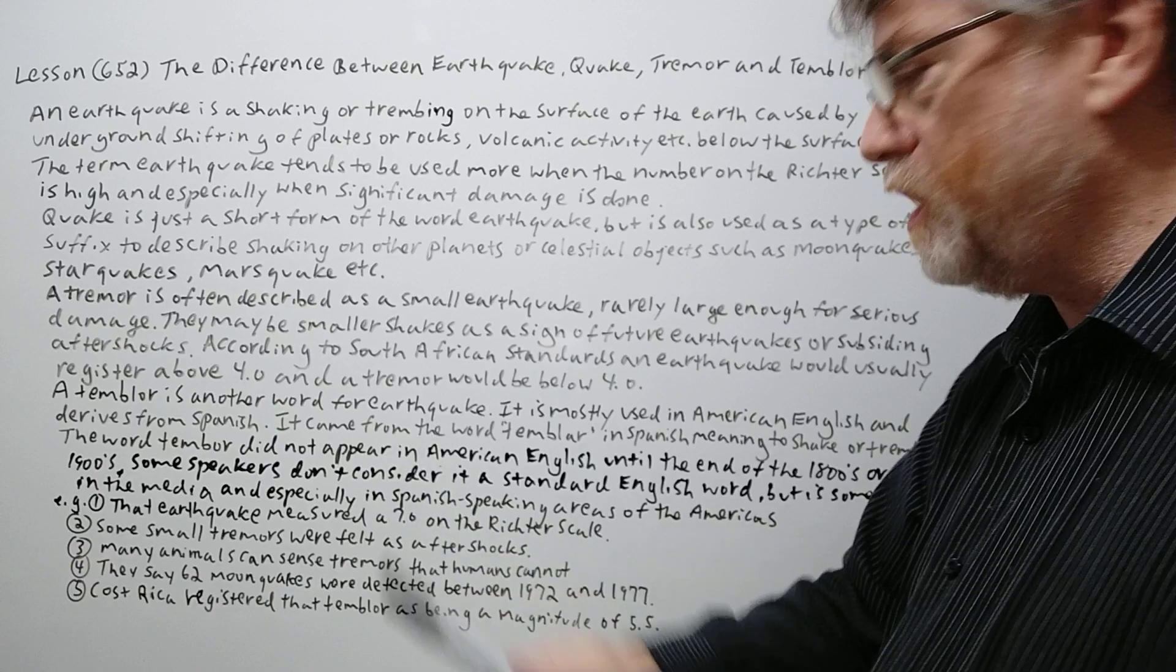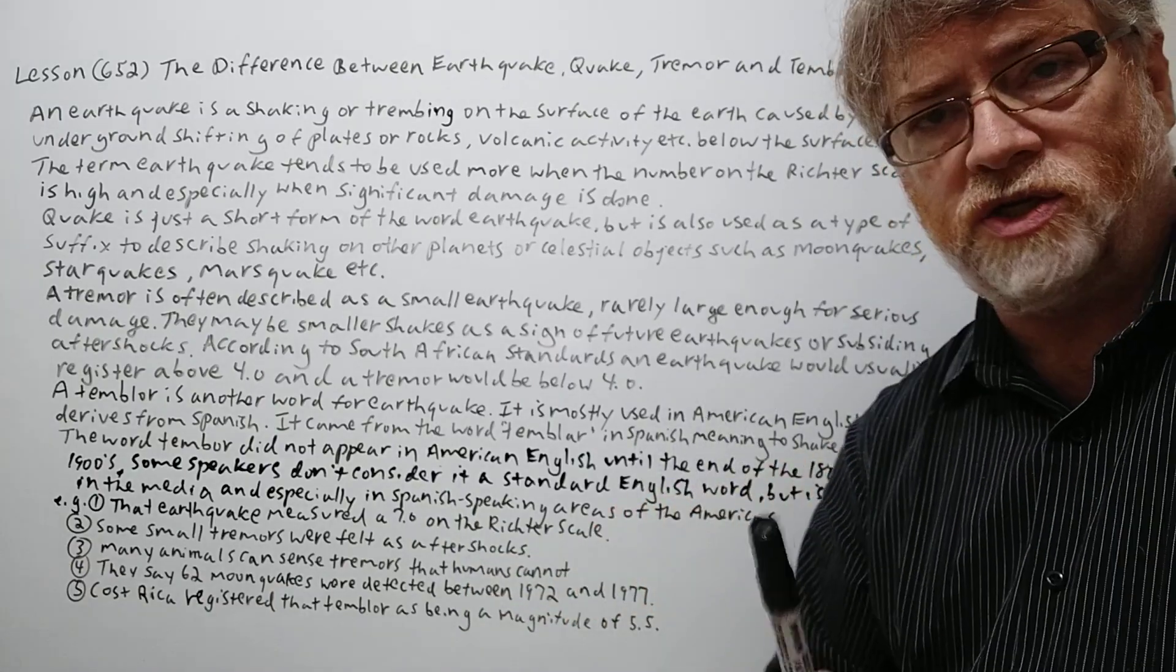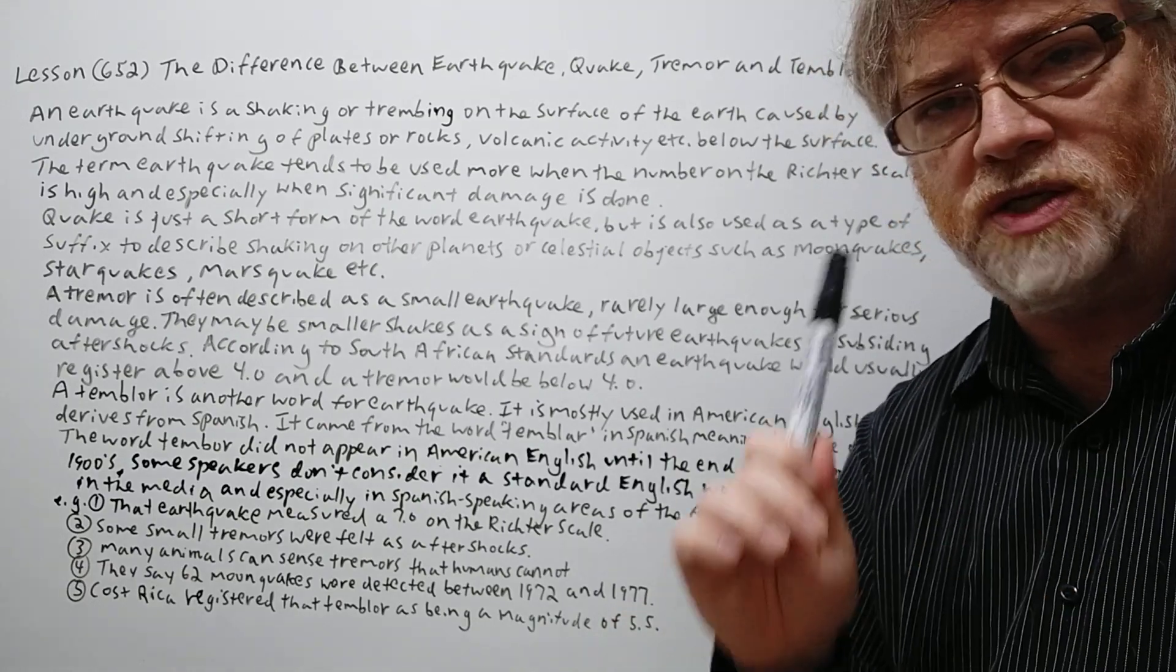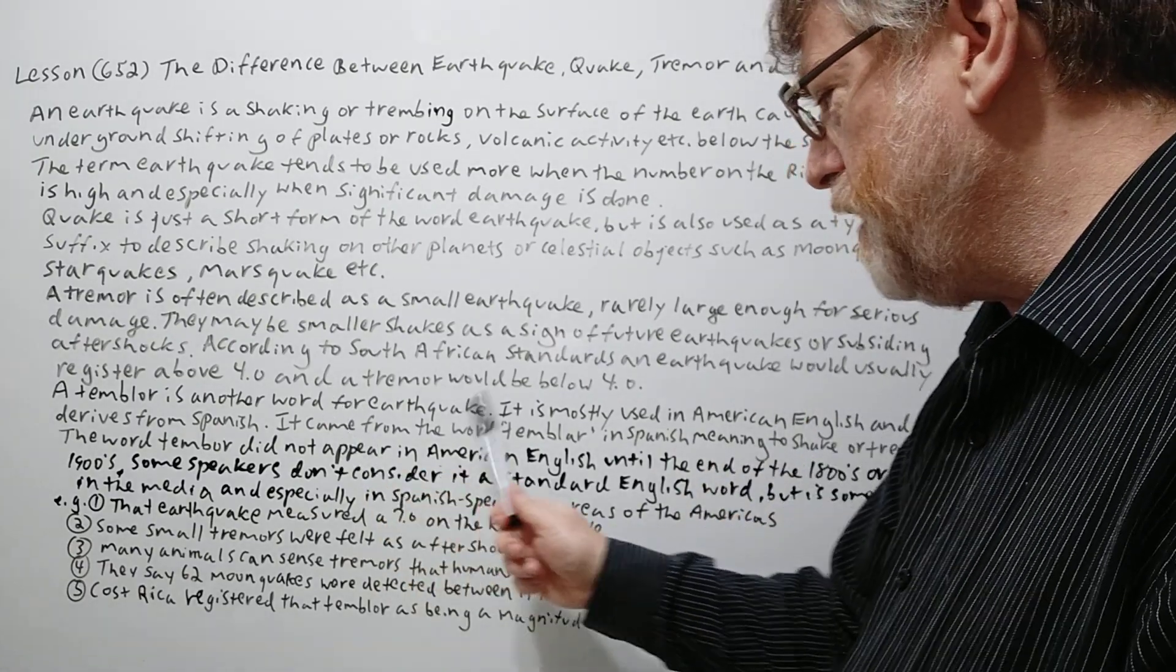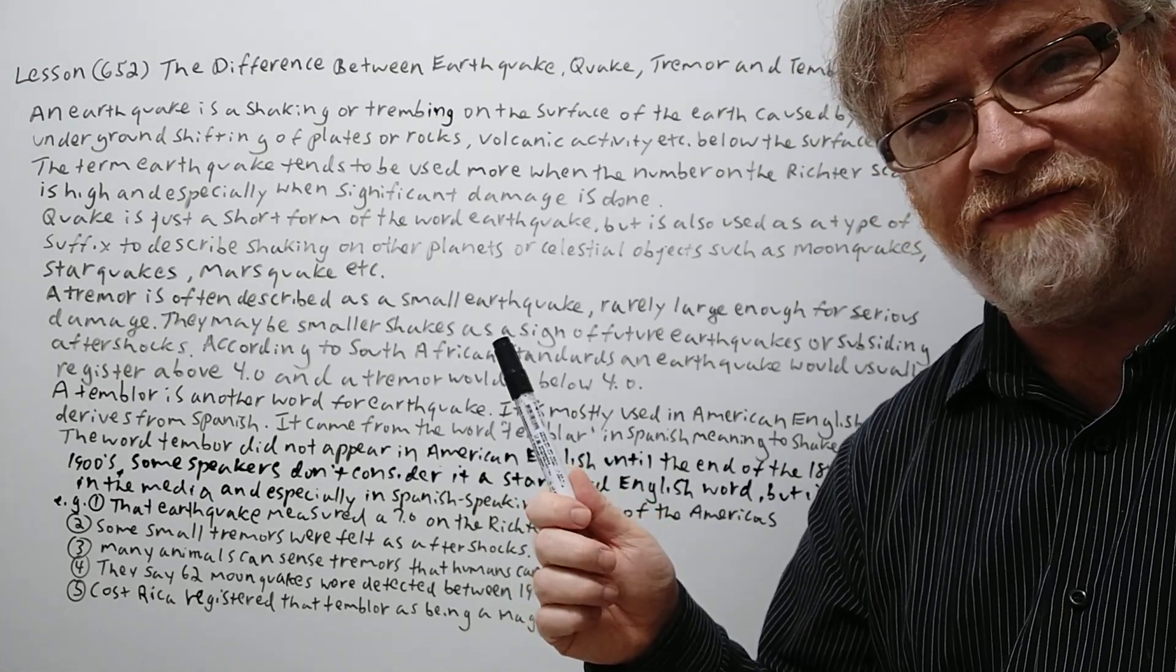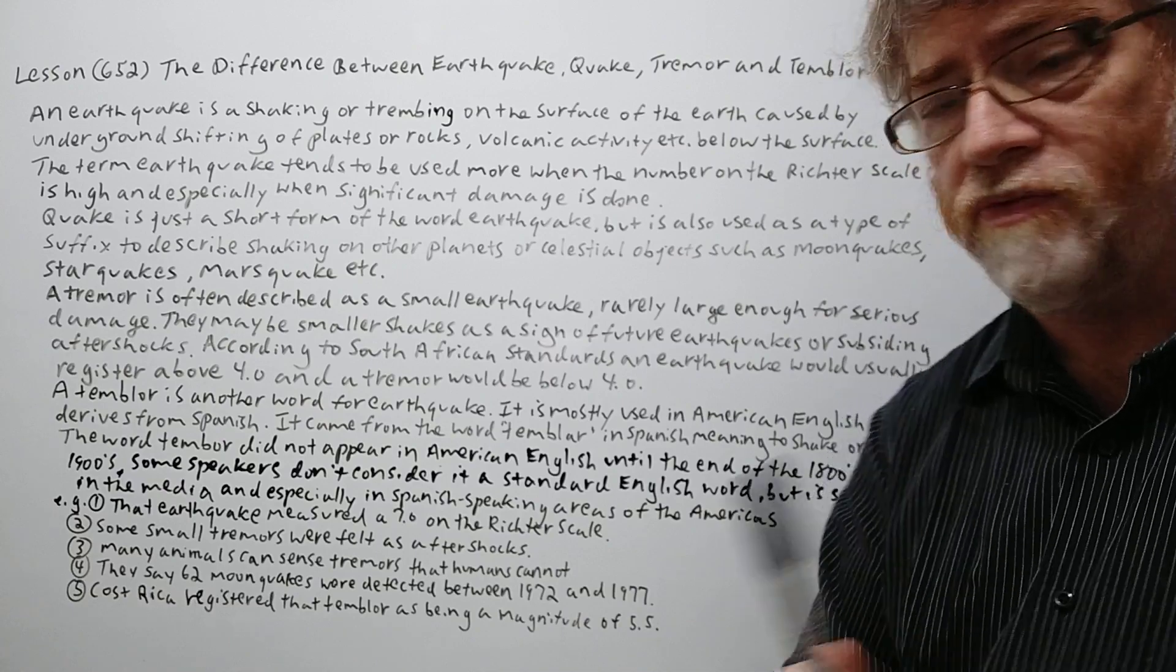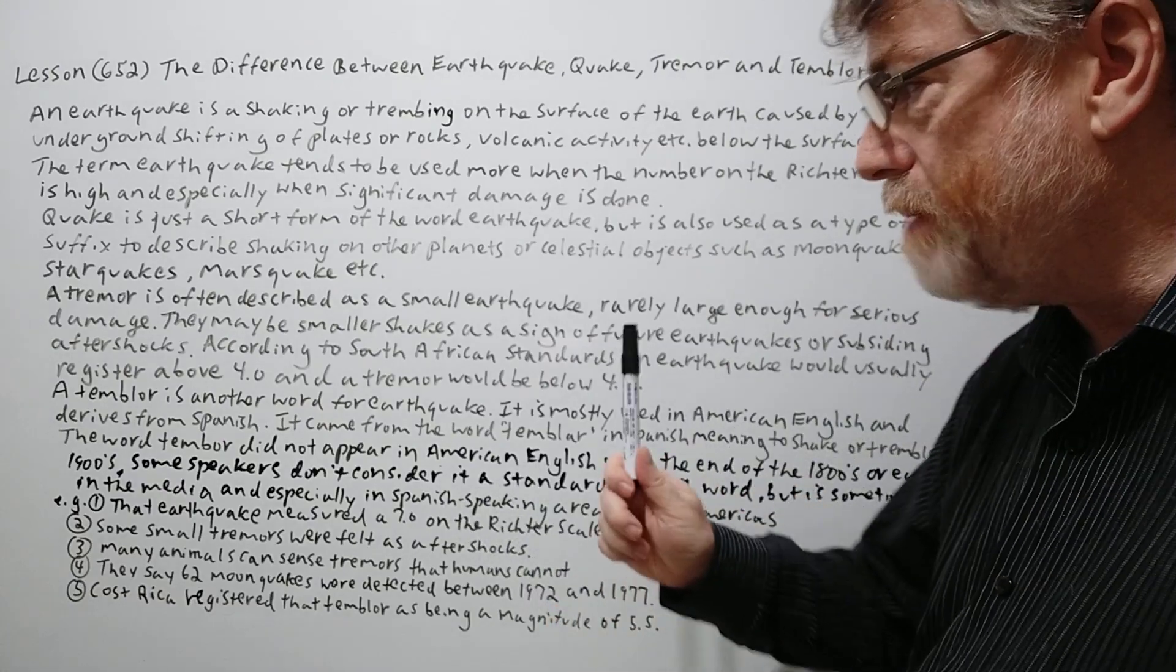A temblor is another word for earthquake. It is mostly used in American English. British English, Australian English they don't use that and it derives from Spanish. It came from the word tembler, the verb. We also say temblor for the noun in Spanish meaning to shake or to tremble.